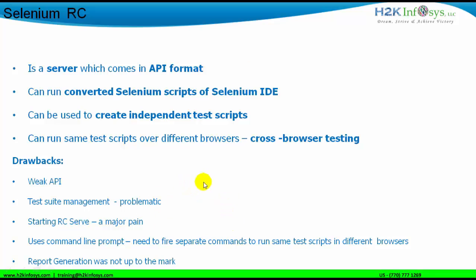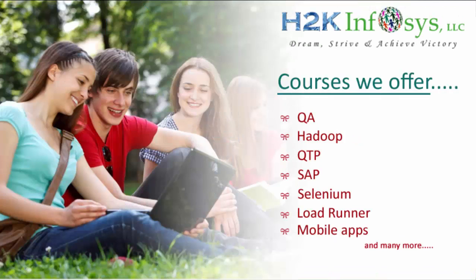The next drawback is starting the RC server. In order to use RC, the first thing we need to do is start the RC server. If the RC server does not start, we will not be able to use the RC API at all. We have to start the RC server by firing commands through the command line prompt. And most of the time, the RC server misfired — meaning most of the time the RC server did not start. This was one of the major pain areas of using Selenium RC for companies doing automation.